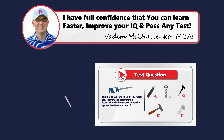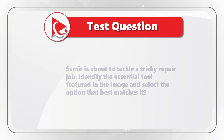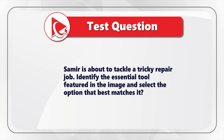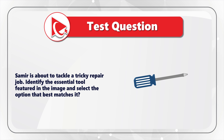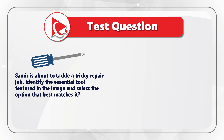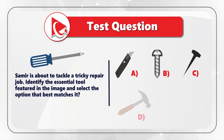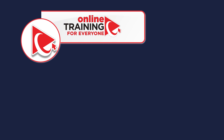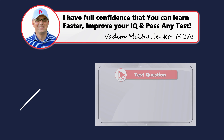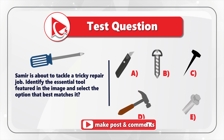Here's a very interesting question where you need to demonstrate your knowledge of tools and their uses. Samir is about to tackle a tricky repair job. You need to identify the essential tool featured in the image and select the option that best matches it. You're presented with five choices: A, B, C, D, E. Take a close look to see if you can come up with the answer. On my end, I am moving forward to share with you my version of the solution.